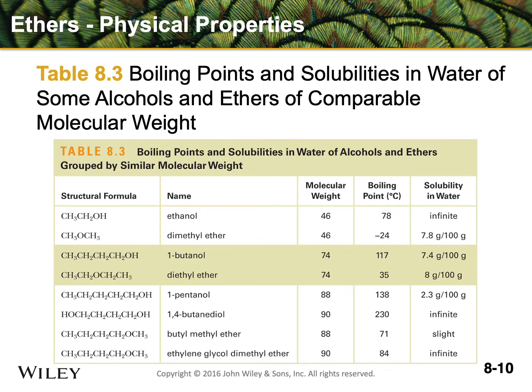Let's compare ethanol with dimethyl ether. In the first white band, the molecular weights are about the same, but there is a significant difference in boiling point — almost a hundred degree difference between the ethanol and the dimethyl ether. That has everything to do with ethanol's ability to hydrogen bond. Note that the solubility of the ether is fairly low in water, though not completely zero, because water can hydrogen bond to the oxygen of the ether, allowing some of it to dissolve.